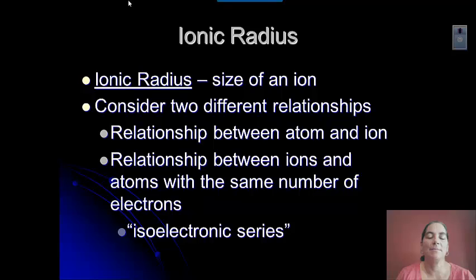When we have atoms and ions that have the same number of electrons, we call that an isoelectronic series. Iso meaning same. You might remember that from biology. Isotonic. So let's look at that.